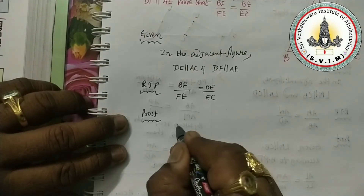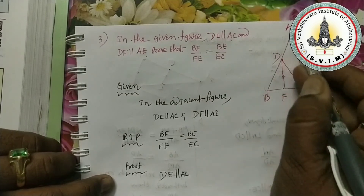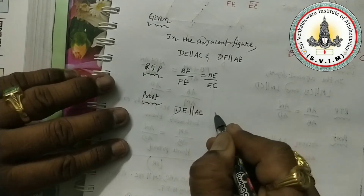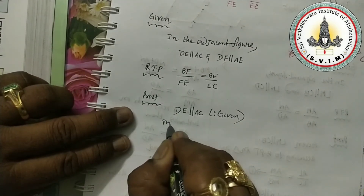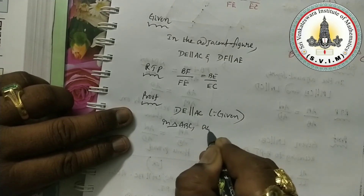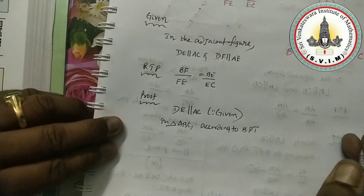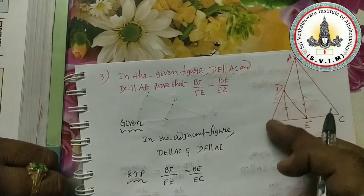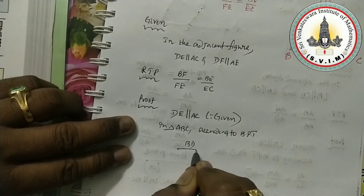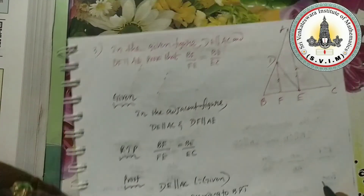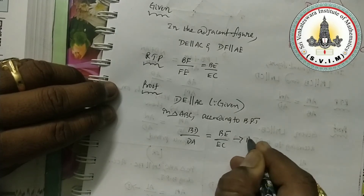For the proof, take the first clue: DE is parallel to AC. Consider triangle ABC. In triangle ABC, according to Basic Proportionality Theorem: BD by DA is equal to BE by EC — taking this as equation 1.